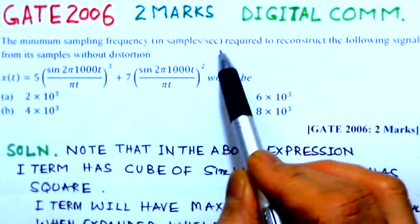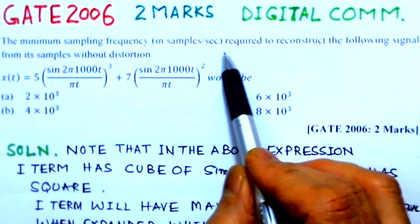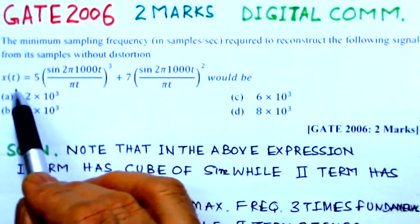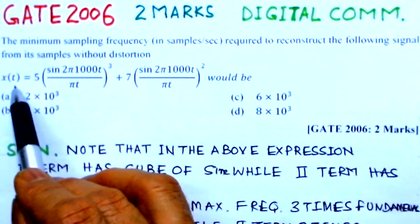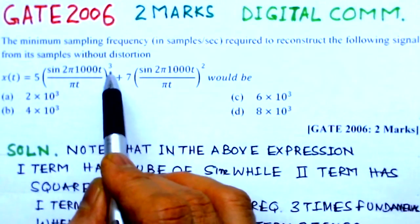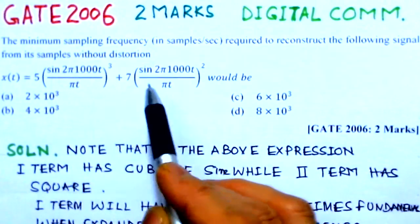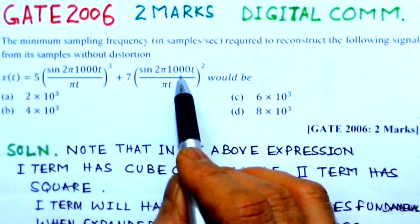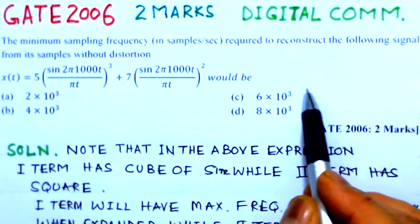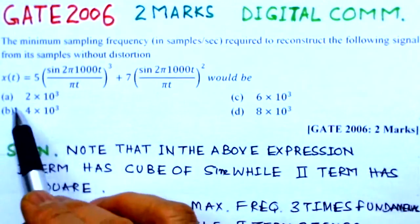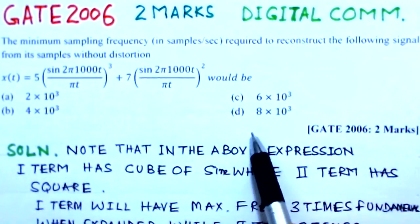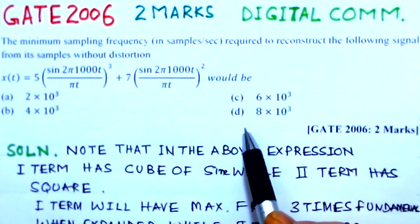The minimum sampling frequency in samples per second required to reconstruct the following signal from its samples without distortion. The value of x(t) is given: 5[sin(2π1000t)/(πt)]³ + 7[sin(2π1000t)/(πt)]². There are four options: (a) 2×10³, (b) 4×10³, (c) 6×10³, (d) 8×10³. So we have to find out what is the minimum sampling frequency.